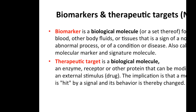Let's recall what biomarkers are and what therapeutic targets are — people often confuse the two. A biomarker is a biological molecule found in bodily fluids, secretions, or tissues that is a sign of a normal or abnormal process. A therapeutic target is also a biological molecule, but one that can be modified by an external stimulus — a drug. For example, a tyrosine kinase receptor transduces a signal, and once we inhibit that receptor, it stops transmitting the signal. Sometimes therapeutic targets are the same as biomarkers, but very often they are different molecules.